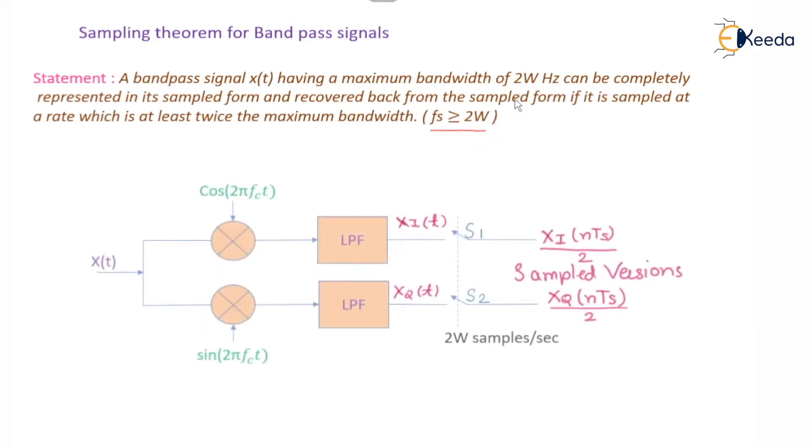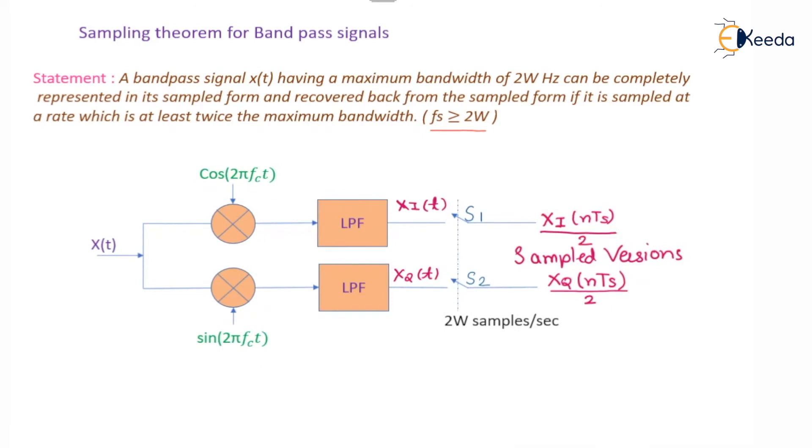Now let us see how the sampling of the bandpass signal is carried out. X(t) is the information signal which is coupled to two multipliers. One multiplier has cos(2πfct), our carrier, whereas the other multiplier has a separate second carrier, sin(2πfct).